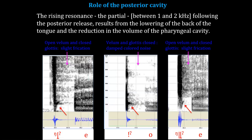Regarding the role of the posterior cavity, the rising resonance between one and two kilohertz following the posterior release results from the lowering of the back of the tongue and the reduction in the volume of the pharyngeal cavity. For the dental nasal and glottal click, you have an open velum and a closed glottis that results in a slight frication noise after the release.